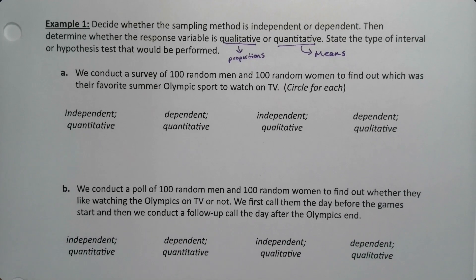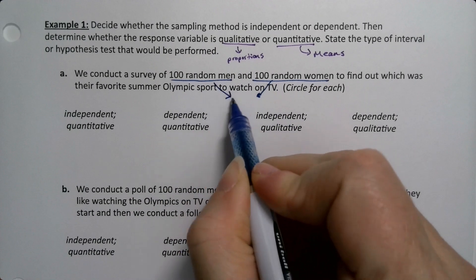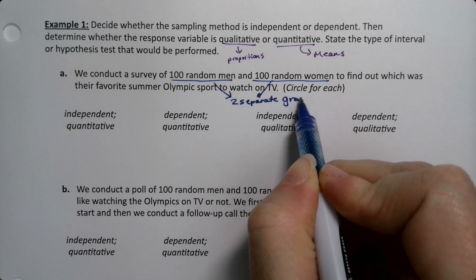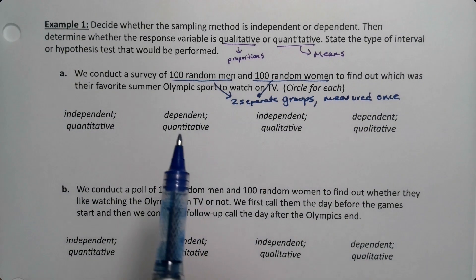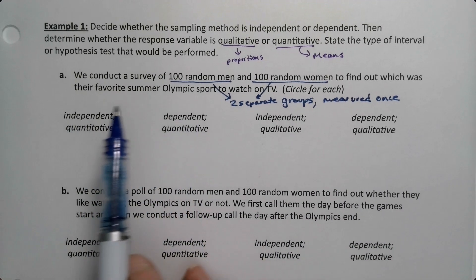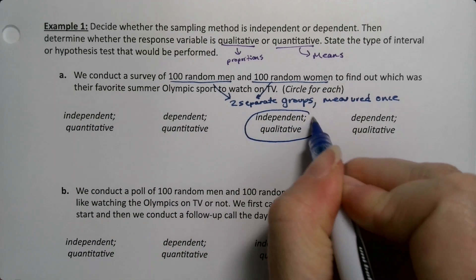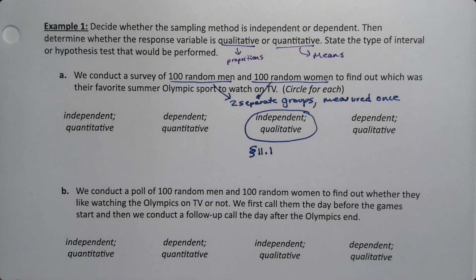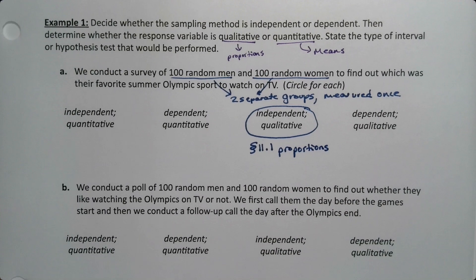We conduct a survey of 100 random men and 100 random women to find out which was their favorite summer Olympic sport to watch on television. Well, that's two separate groups — 100 random men and 100 random women — measured once. So that would be independent. And when I ask the person what's your favorite sport, they're not going to answer with a number; they're going to answer with a word. That's qualitative — section 11.1 — and we'll be working with proportions, whether it's a confidence interval or hypothesis test.